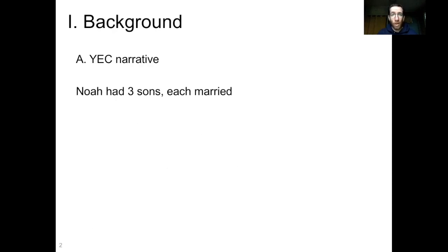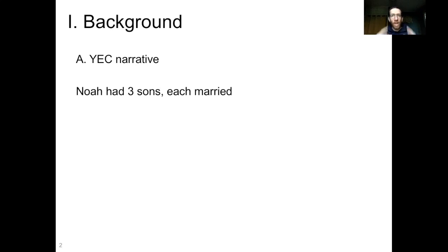A little bit of background on this myth. It is required to make the Young Earth Creationist, or YEC, narrative work. Basically, if you follow that narrative, Noah was a literal historical figure. His sons and their wives were literal historical figures who existed, and they represent a bottleneck in the history of humanity. All extant humans are descended from Noah's family. Noah had three sons, each of whom was married. The identity of Noah's daughters-in-law is not revealed in the Bible, but we know that all human mitochondrial DNA that exists today has to go through those three daughters-in-law.